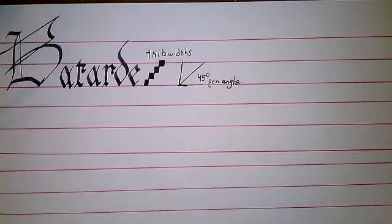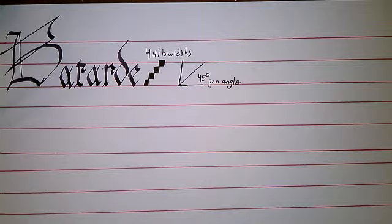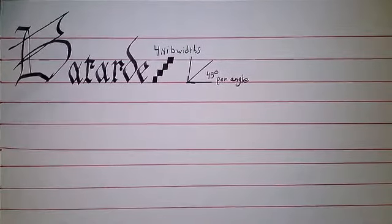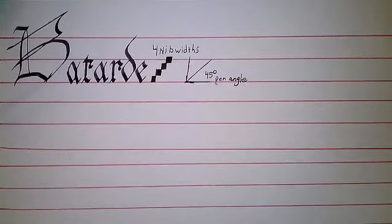Batard is what happened when scribes got tired of the strict rigidity of different kinds of gothics and started to make it a little curvy, a little swoopy — but it still has rigidity and still requires paying attention to detail. It's just not as strict as gothic persisius, gothic textura, or quadrada, but the requirement is still there.